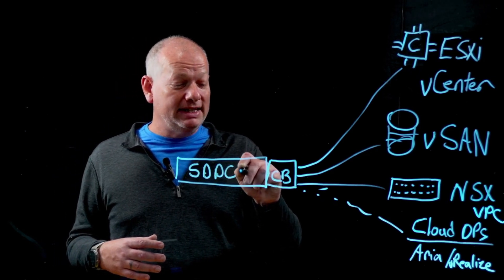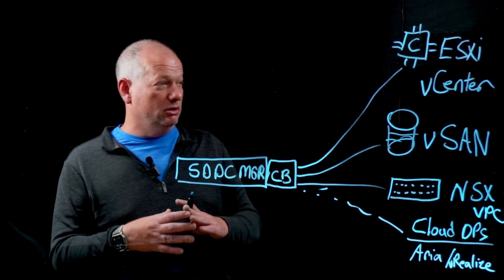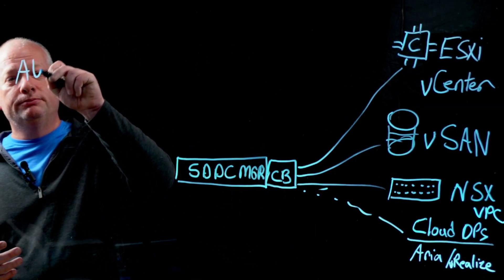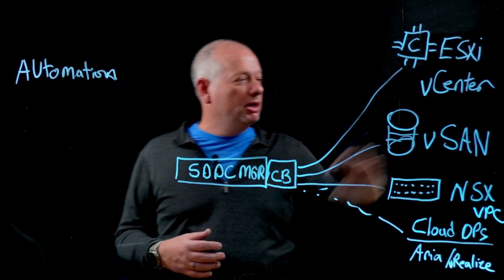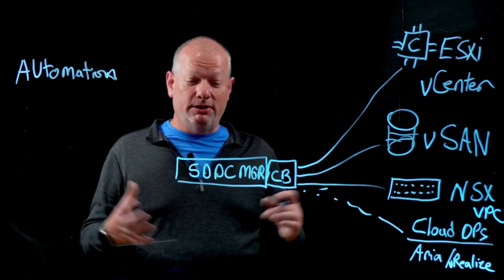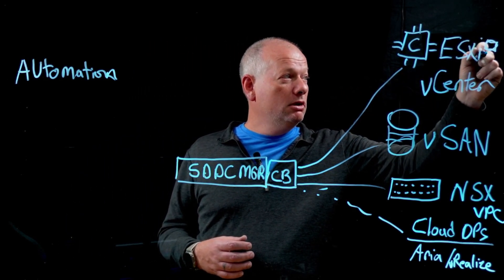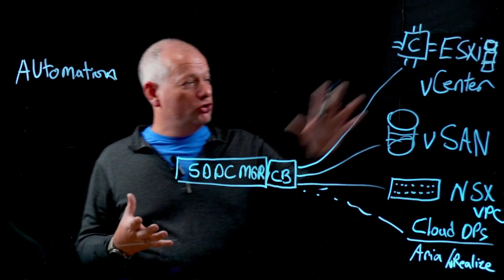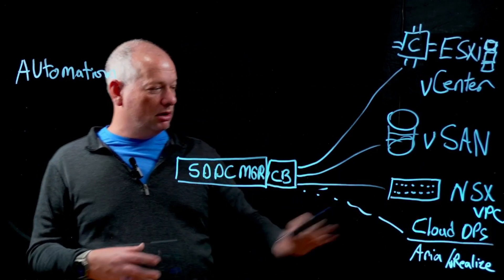From then on, we leverage another appliance called the SDDC Manager. It's this SDDC Manager that delivers ongoing automation with VMware Cloud Foundation. For example, if you need to add more capacity, you go to the SDDC Manager interface and add an additional host to the infrastructure — all with automation. The SDDC Manager drives all these components and delivers automated deployment of compute, storage, and networking, while we monitor everything with the cloud operations components.